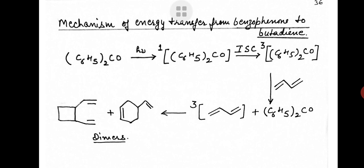Triplet energy transfer is possible here only because the triplet state of butadiene is of lower energy than that of benzophenone, as shown in the figure. On the other hand, the singlet excitation energy of benzophenone is less than that of butadiene, so singlet energy transfer from benzophenone to butadiene is not possible in this reaction. It is always advisable to draw the figure first and then study each step one by one.